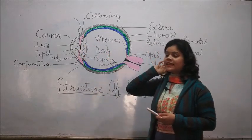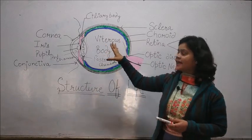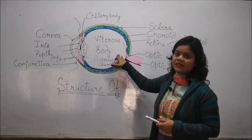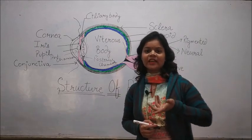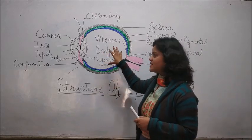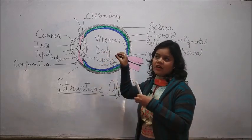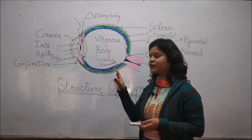After the lens, there is one more space that is known as the vitreous body and it contains the vitreous humor. Vitreous humor is a gelatin fluid which helps to maintain the shape of the eyeball. Or we can say it is the innermost part which helps to make the shape spherical of the eyeball.